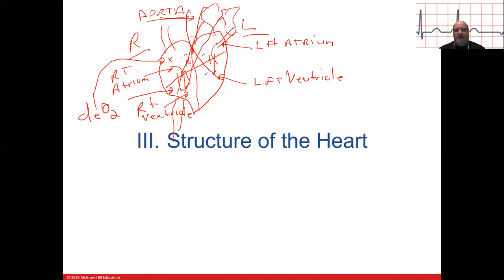The blood leaves the heart to go to the lungs to get oxygen, then it comes back into the left atrium from the lungs and goes into the left ventricle, then out to the whole body via the aorta — the largest artery of the body. The left side is oxygenated blood going to the systemic circuit. The right side is deoxygenated blood — blue blood. Remember, an artery takes blood away from the heart; a vein drains blood back toward the heart.